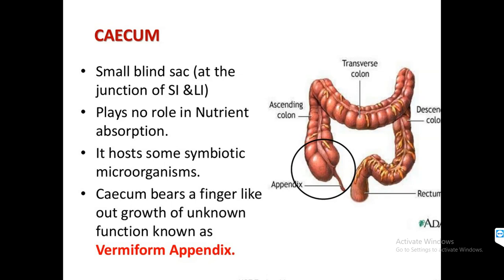On the basis of structure, the colon is divided into four parts: ascending, descending, transverse, and sigmoid. The role of the cecum is mainly in the absorption of various nutrients. There is no digestion here; the digested food is moving from various organs, and here absorption takes place.